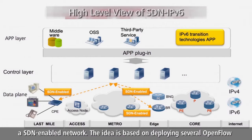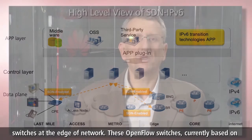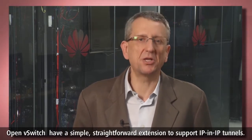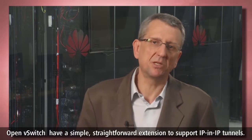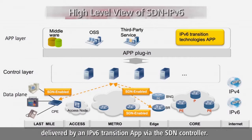We have defined and demonstrated IPv6 transition technologies in an SDN-enabled network. The idea is based on deploying several OpenFlow switches at the edge of the network. Though these OpenFlow switches, currently based on an OpenBee switch, have a simple, straightforward extension to support IP in IP tunnels. The OpenFlow switches process the incoming packets based on flow tables delivered by an IPv6 transition app via the SDN controller.